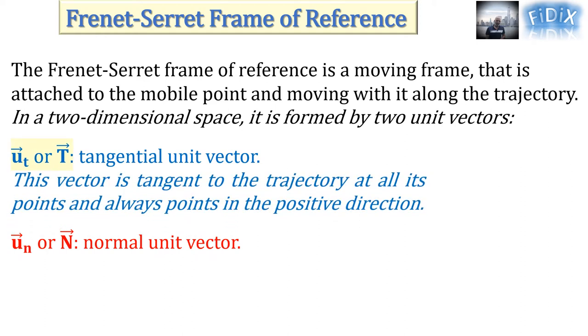U_T is a unit vector that is tangent to the trajectory at all its points and always points in the positive direction.